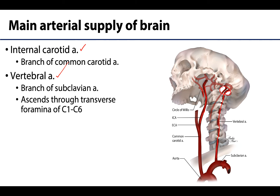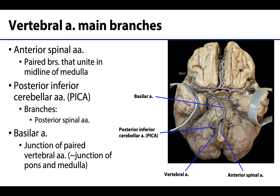It is the two vertebral arteries that unite to form the basilar artery, which you can see here. But before we get to the basilar artery, let's talk about some branches of the vertebral artery after it has ascended through the foramen magnum but before they unite to form the basilar. The first is the anterior spinal arteries, which you can see here — they will unite and run down the midline of the medulla, descending to supply the anterior portions of the spinal cord. You will have one anterior spinal artery formed from contributions from both vertebral arteries.